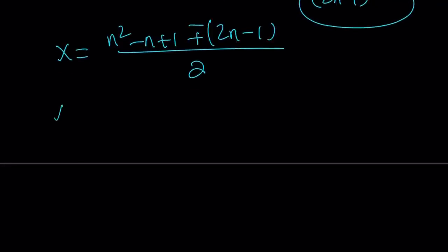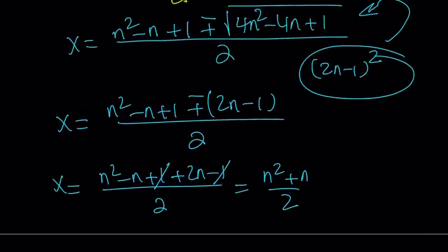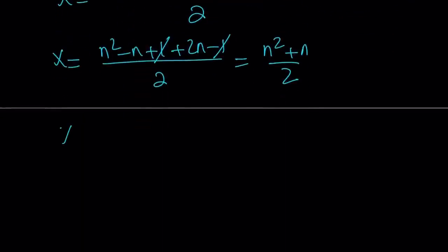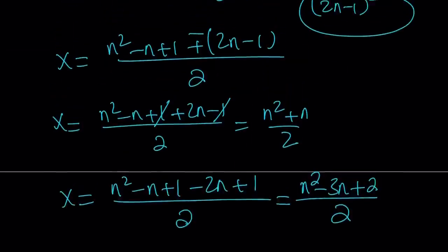Now we split into the two cases. Taking the plus sign, we get n squared minus n plus 2n minus 1 plus 1 over 2; the 1s cancel and negative n plus 2n gives n squared plus n divided by 2. Taking the minus sign, we get n squared minus 3n plus 2 all over 2. Note that n squared plus n factors as n times n plus 1, and n squared minus 3n plus 2 factors as n minus 1 times n minus 2 — those are products of consecutive integers.